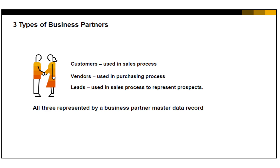They are customers, vendors, and leads. Leads are used in the sales process to represent sales prospects. Once a sale is made, you can convert a lead to a customer. Vendors are used in the purchasing process.